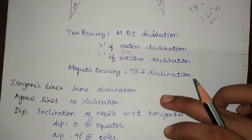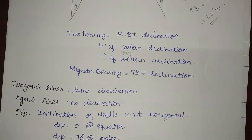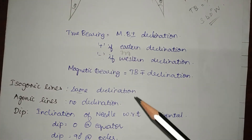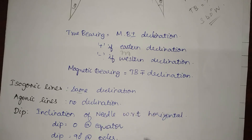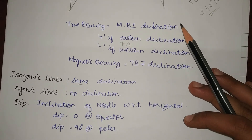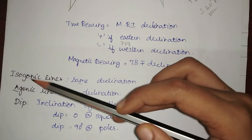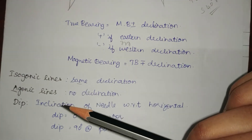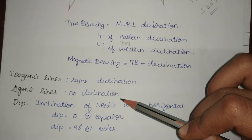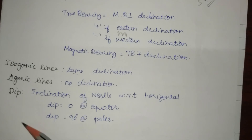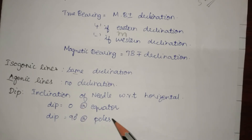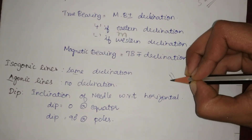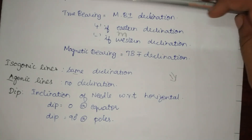A few definitions: isogonic lines — 'iso' means same, so isogonic lines are lines connecting points having the same magnetic declination. Agonic lines — 'a' means absence, so agonic lines are lines joining points having zero declination. Finally, dip is the inclination of the needle with respect to horizontal. Dip is zero at the equator and 90 degrees at the poles. Thank you for watching — please like, share, and subscribe.